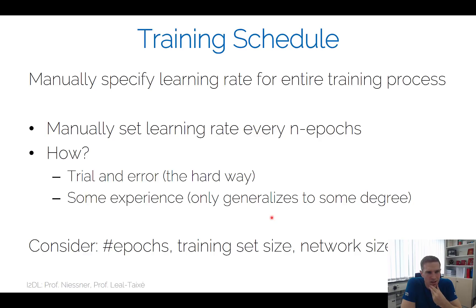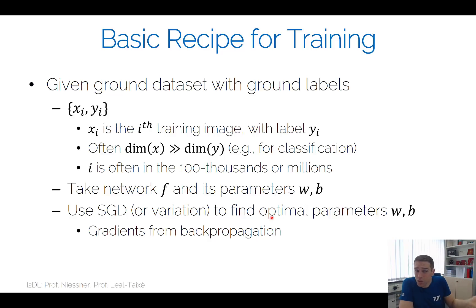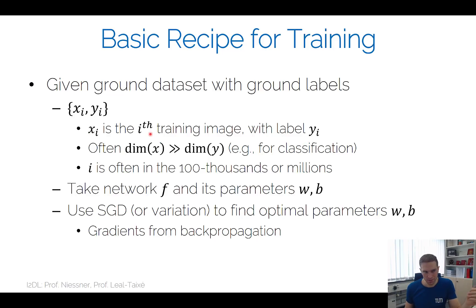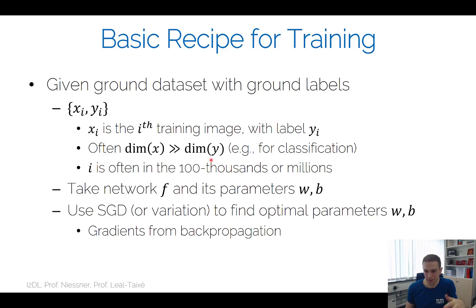Now let's talk about the actual learning part, not just the training part. We've talked about optimization — fitting a neural network model to data. We'd love to scale this up: we have large datasets with ground truth labels. x_i is the i-th training image with label y_i. For a classification task, x is much higher-dimensional than y — an image might have a million pixels but the output is just one float per class.